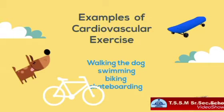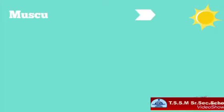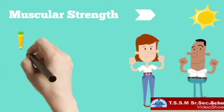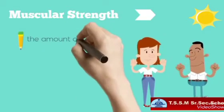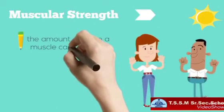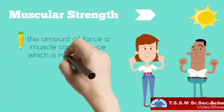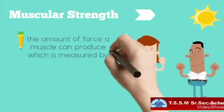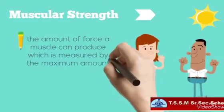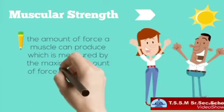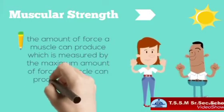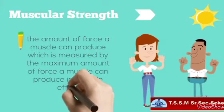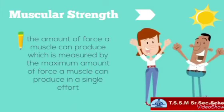The second component is muscular strength. This means the amount of force a muscle can produce, which is measured by the maximum amount of force a muscle can produce in a single effort.